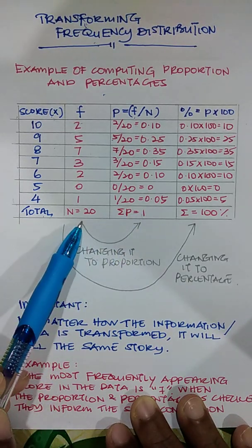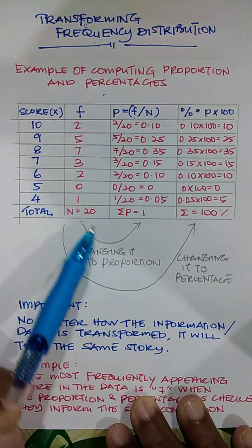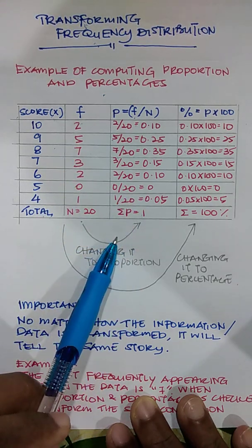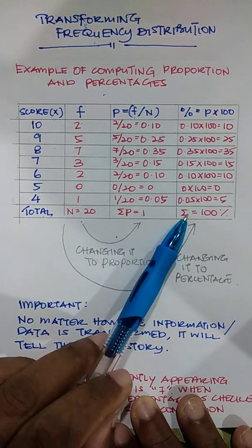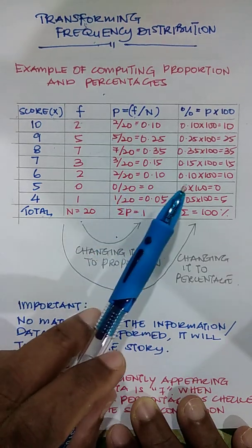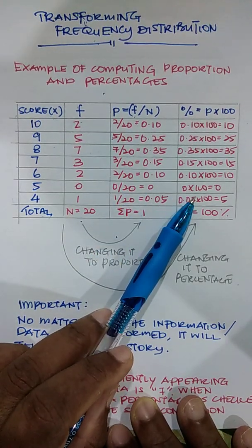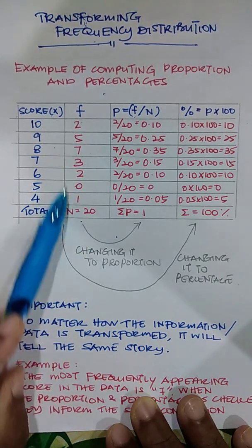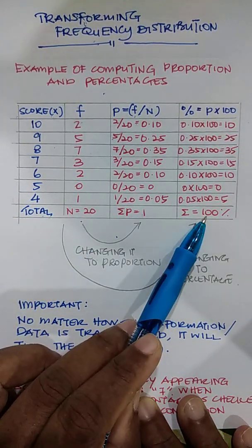So what we are trying to do here is we are changing the format of the frequency. Now what can we do next? From proportion, actually we can calculate the percentages. So from the frequencies, we are changing to percentage.